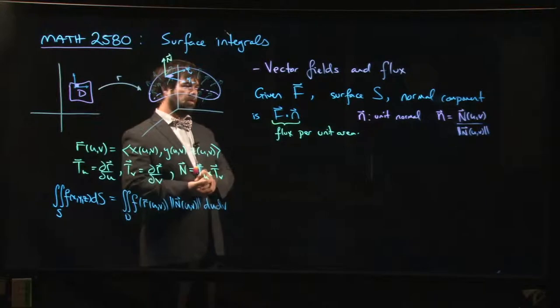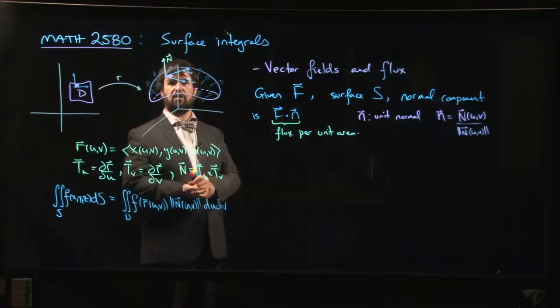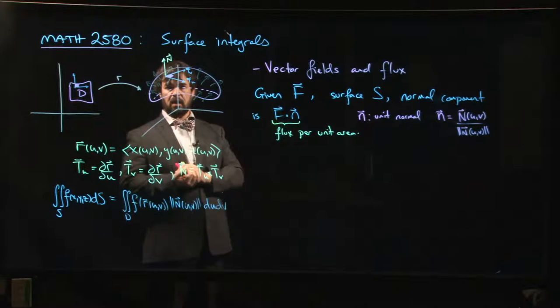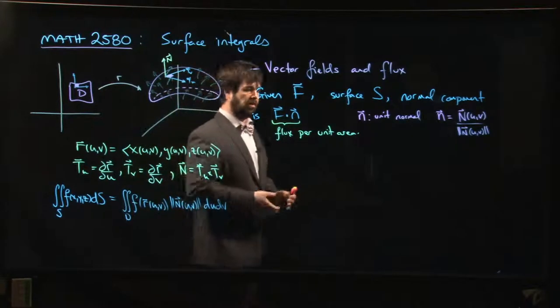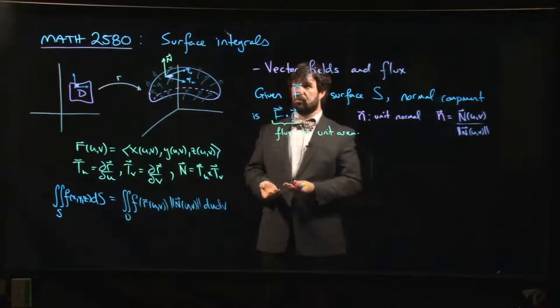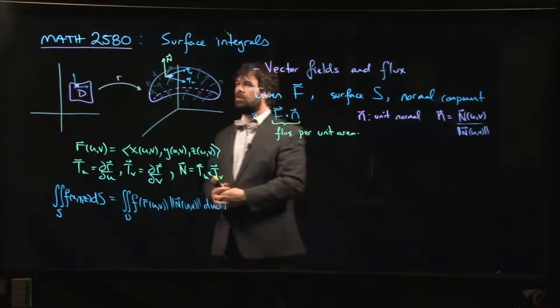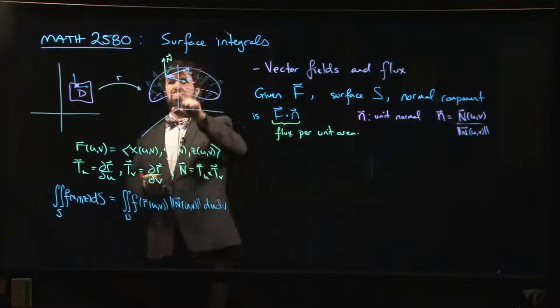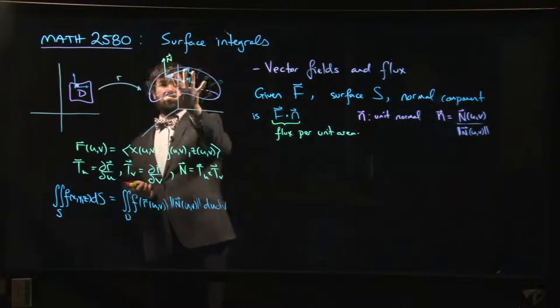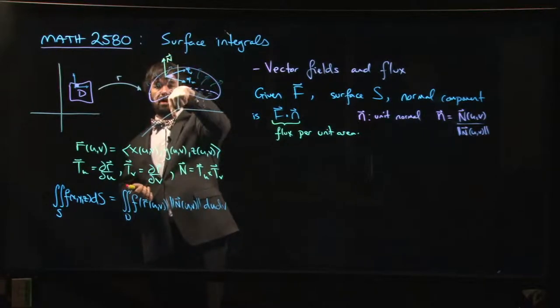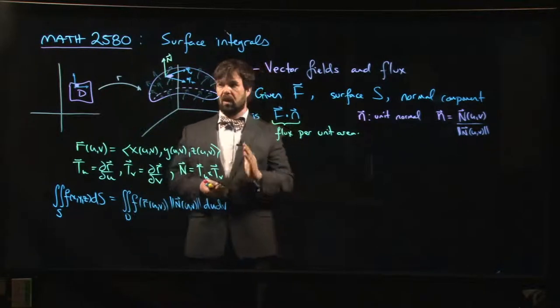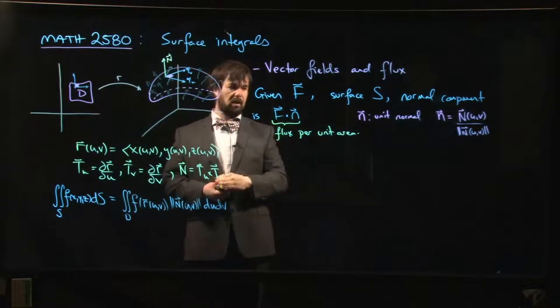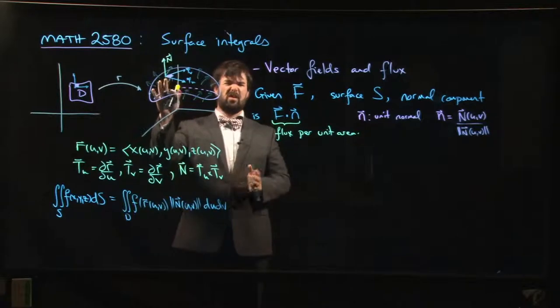If you're computing flux—this idea of flowing across going from one side to the other—then you need to differentiate between one side of the surface and the other. You need to have a choice of orientation, so you need to decide: is your normal vector pointing up or pointing down?